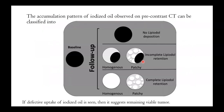The accumulation of iodized oil lipiodol is observed on pre-contrast CT and can be classified into: no lipiodol deposition, homogenous or patchy incomplete lipiodol retention, and homogenous or patchy complete lipiodol retention. If defective uptake of iodized oil lipiodol is seen, it suggests there is remaining viable tissue.